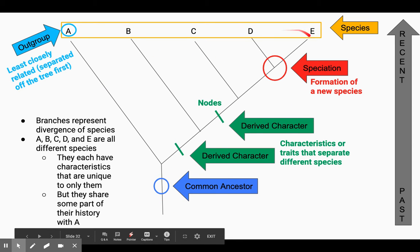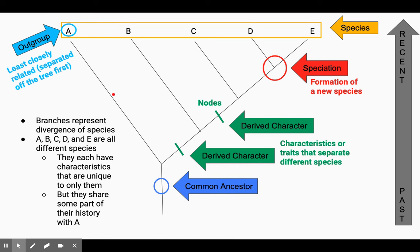B, C, D, and E share some type of history with letter A. So it's a way for us to see relationships, to see how things have evolved into new species.